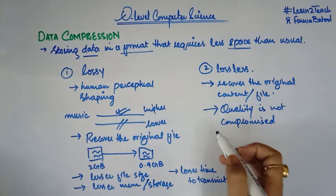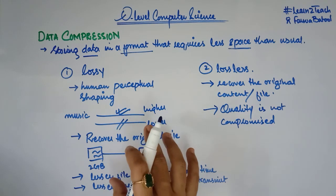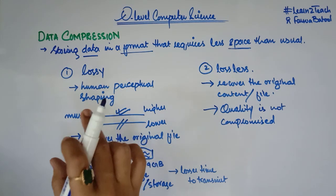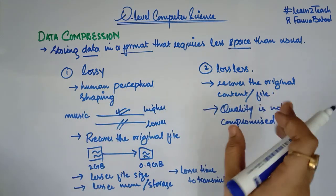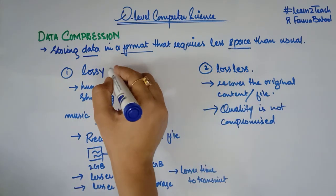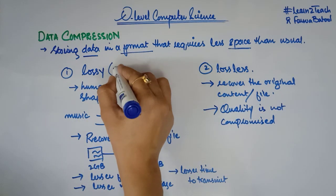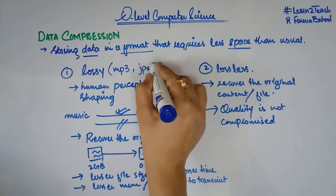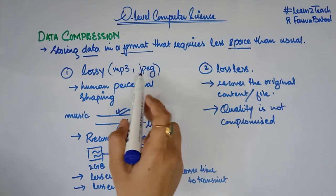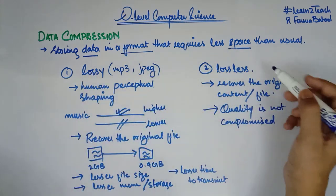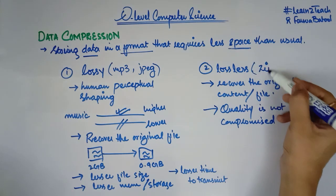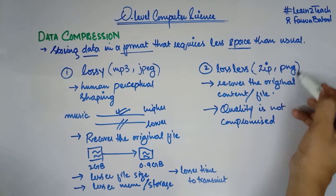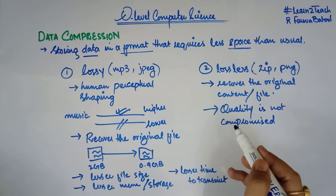Let me give you some examples of formats. MP3 for music and JPEG for images both use lossy compression. For lossless compression, the ZIP files that we use and the PNG format for images are examples of lossless compression.